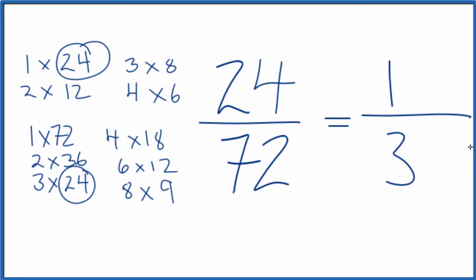There is one more way we can do this. If we didn't know that three times 24 is 72, we could just divide each of these numbers by two, since they're even numbers. 24 divided by two, that gives us 12. 72 divided by two, that's 36.